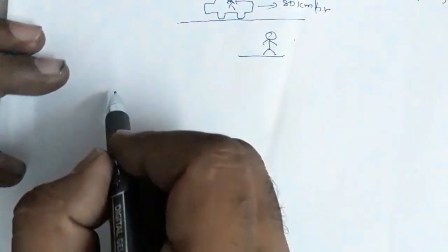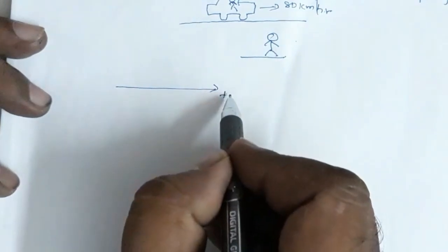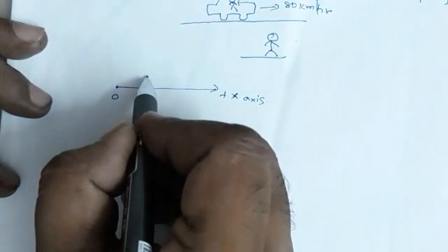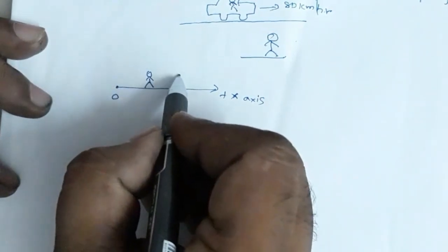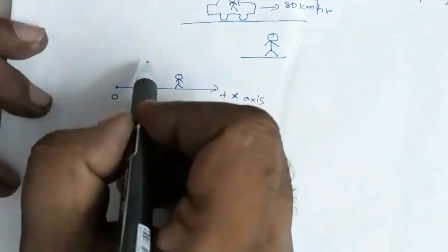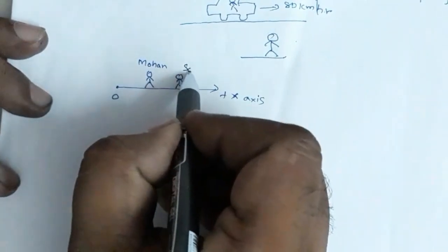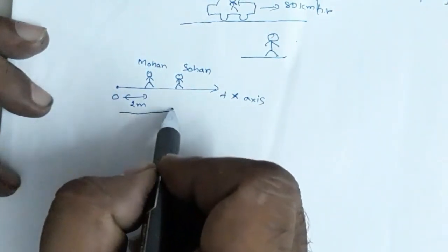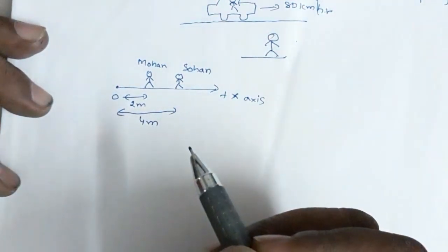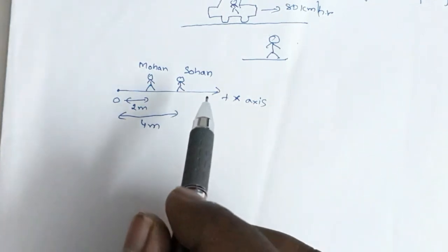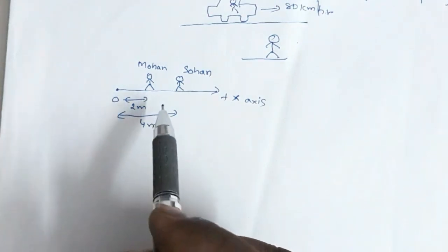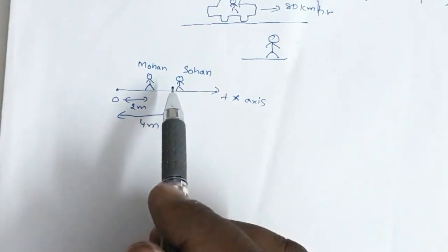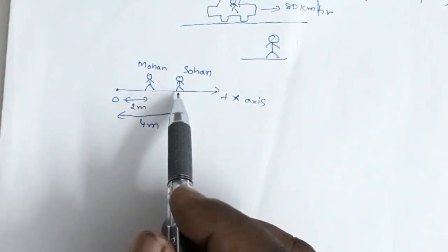Let us see one example. Suppose this is the positive x-axis and this is the origin. One person, Mohan, is at this location and another person, Sohan, is at this location. Mohan is at a distance of 2 meters from the origin; Sohan is at a distance of 4 meters from the origin. If I ask you the position of Sohan with respect to Mohan, the answer is 2 meters, because 4 minus 2 equals 2 meters.